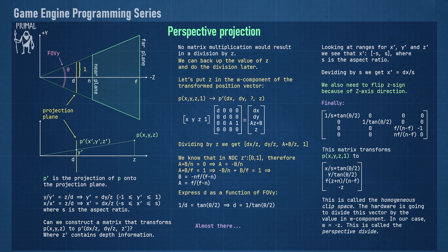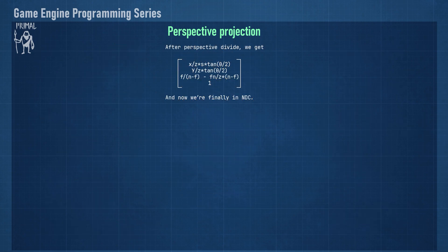Putting it all together, we get the final form of the perspective transform matrix for right-handed coordinate systems. Note that we are subtracting the far field from the near field to effectively flip the Z sign, and the minus 1 here will transform Z to minus Z. This matrix will transform our point P to a space called the homogeneous clip space. In general, we perform this transformation in the vertex shader or any shader that processes the geometry vertices. When we pass this vector to the pixel shader, the hardware assumes the position is in homogeneous clip space and divides each component by whatever value is in the W component — this is called the perspective divide. After the perspective divide, we are fully transformed to normalized device coordinates.